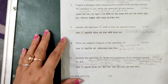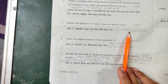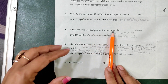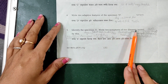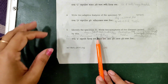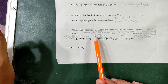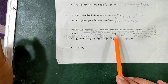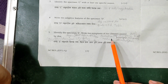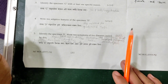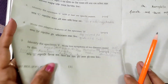The next question is to identify specimen C with at least one specific reason. Next, write the adaptive features of specimen D to dry or aquatic conditions — for example, dry lizard or aquatic fish and turtle. Next, identify specimen E and write symptoms and disease caused — for example, Ascaris lumbricoides causes ascariasis, Entamoeba histolytica causes amoebic dysentery, Plasmodium vivax causes malaria, and Microsporum fungi cause ringworm or dermatophytosis.